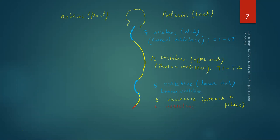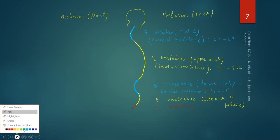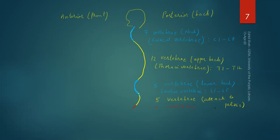Then we have five more vertebrae called sacral vertebrae, or simply called sacrum, designated S1 to S5. The last four are called the coccyx, and they are fused together, so they are not individually designated.